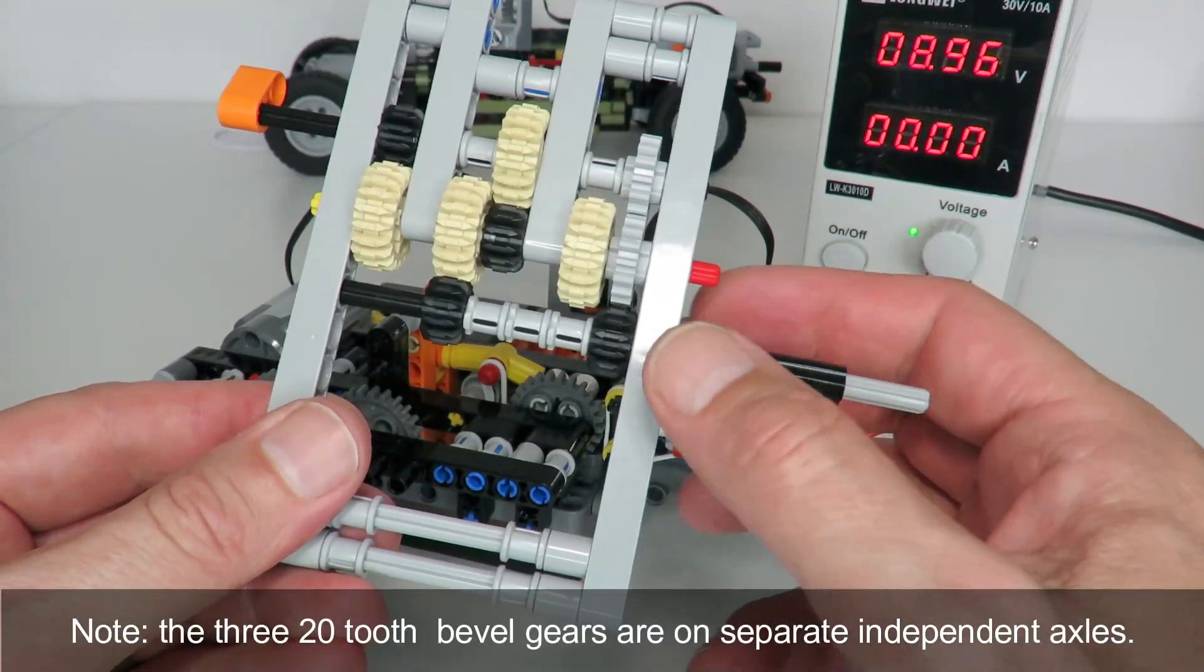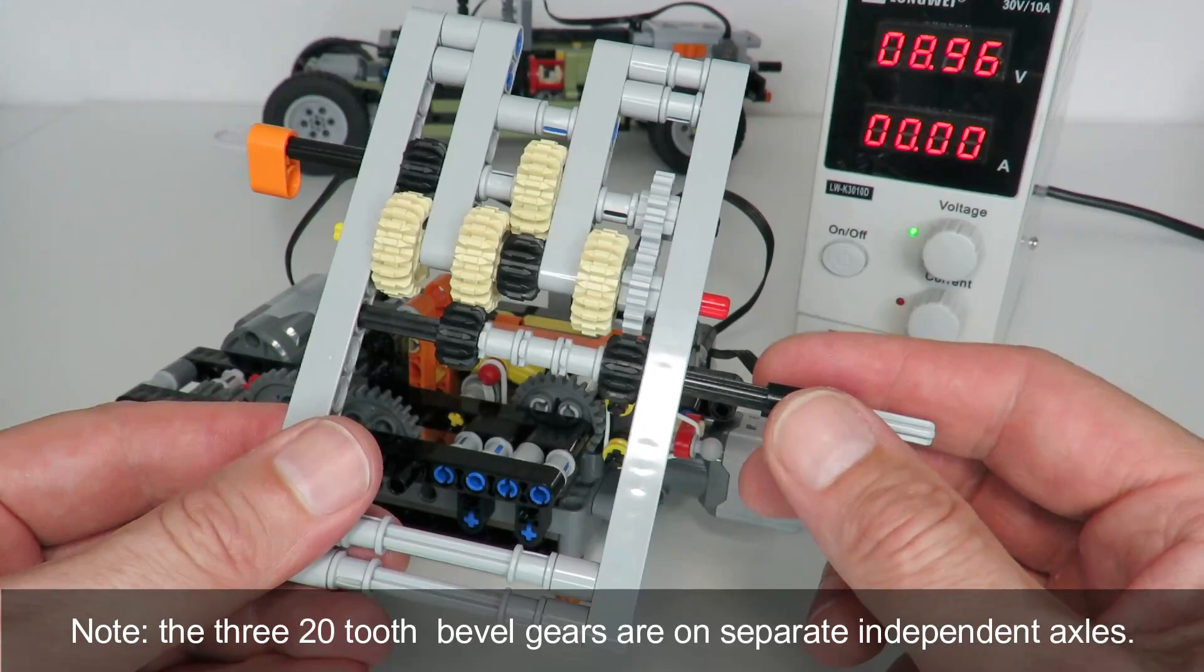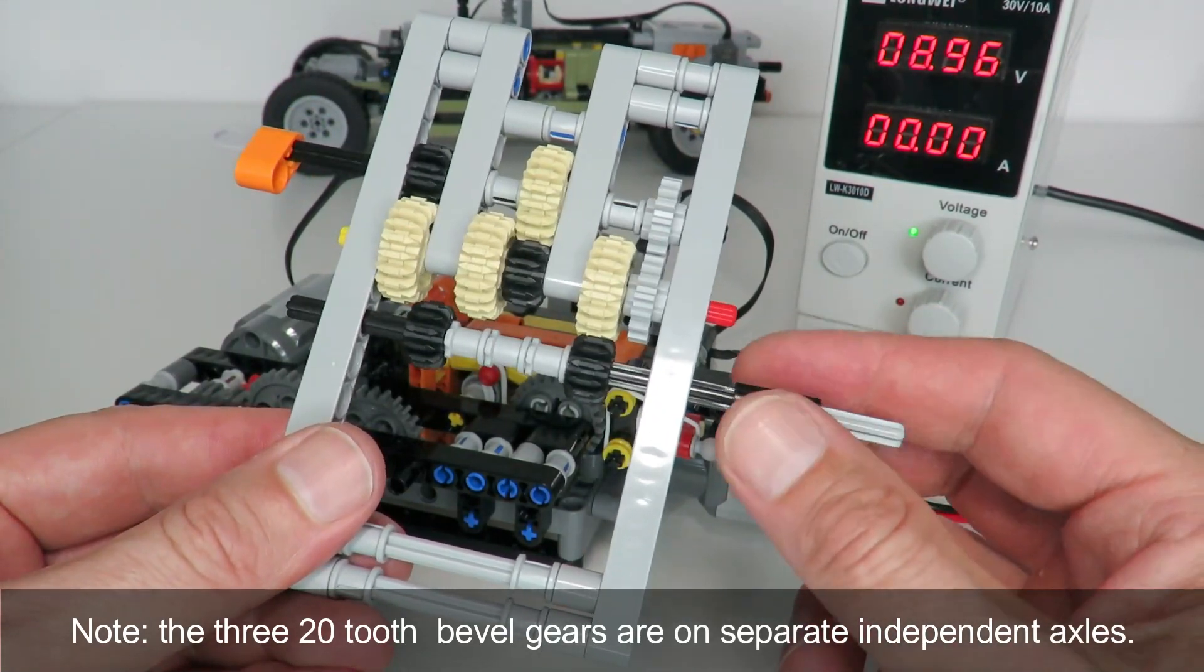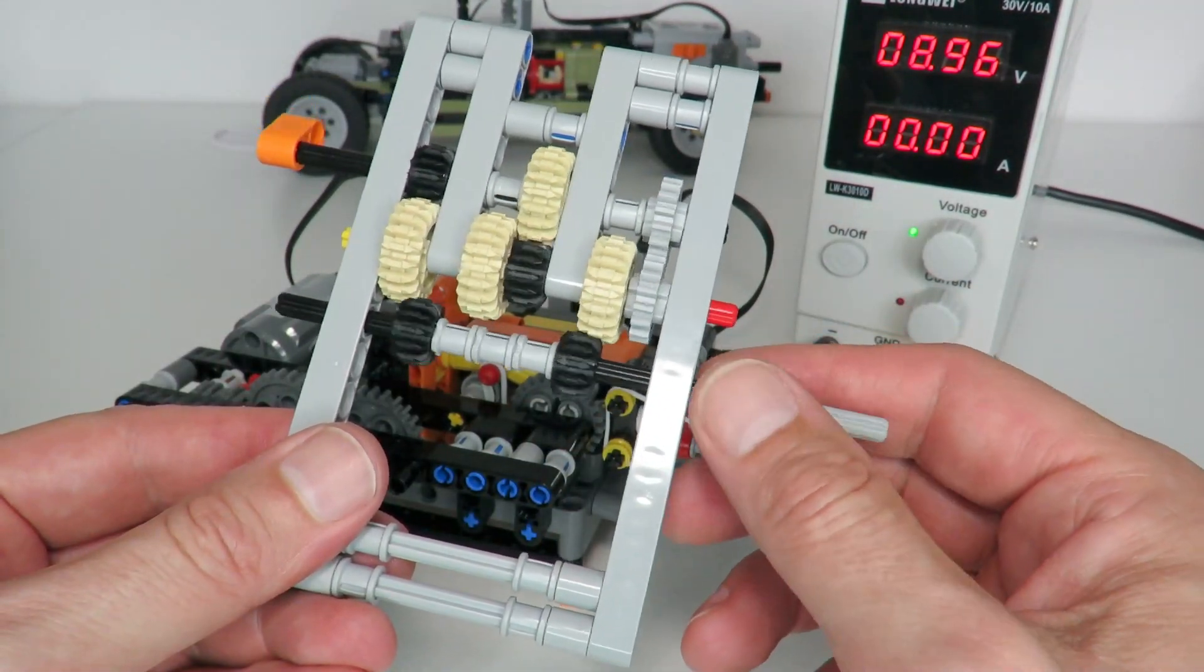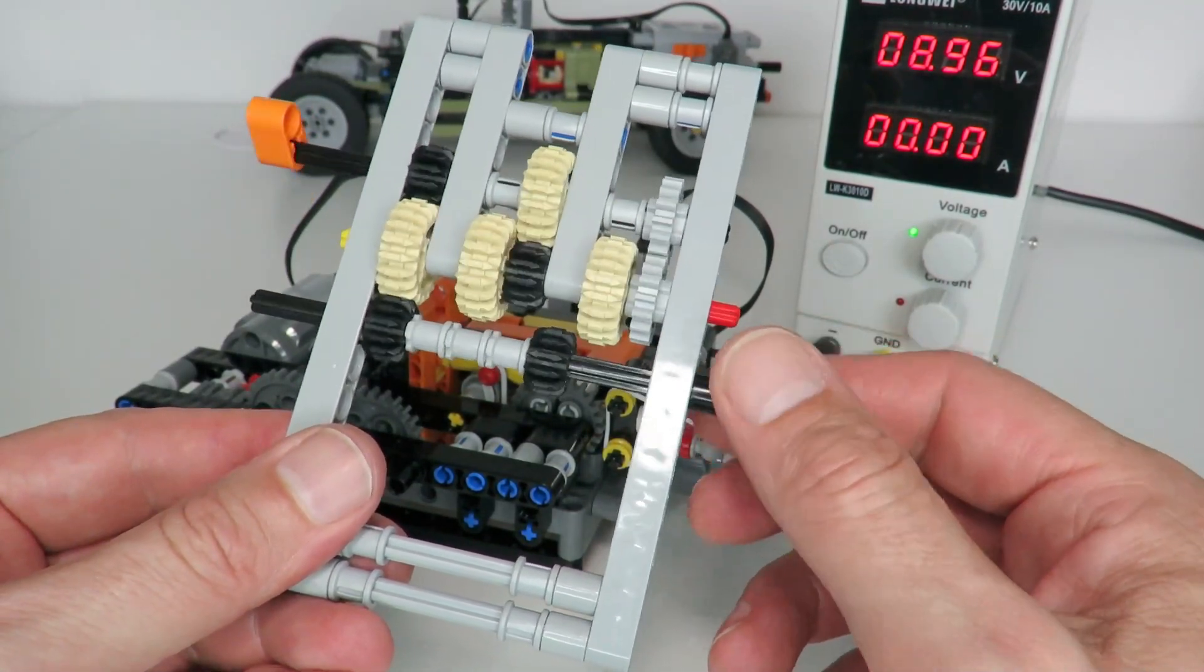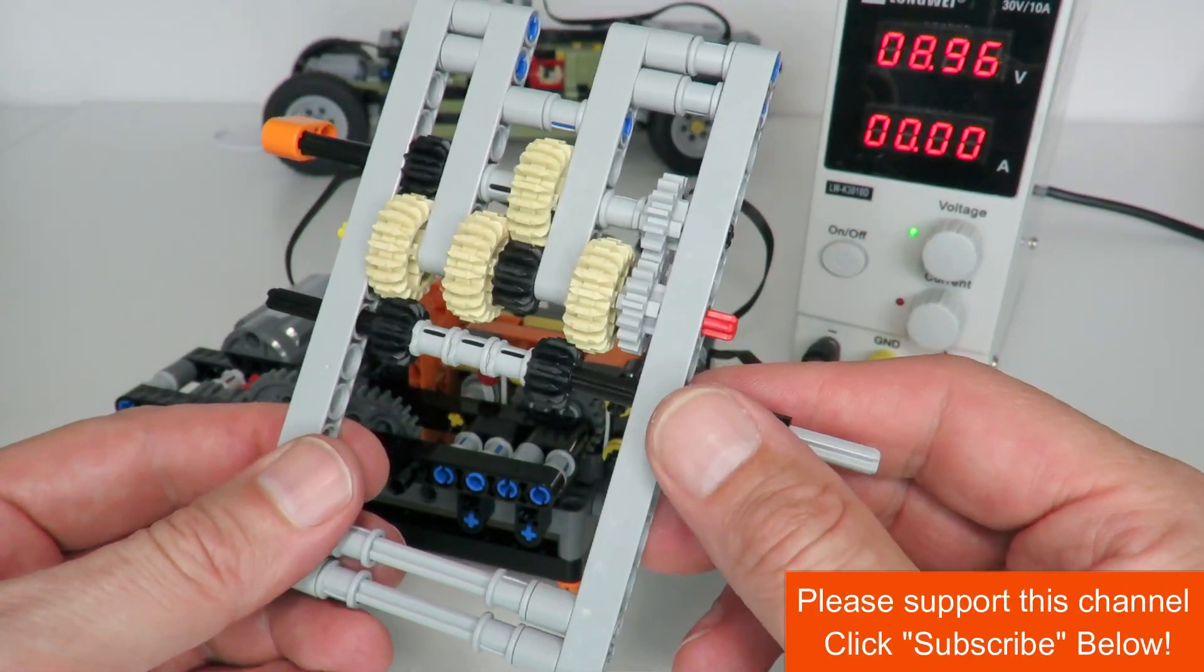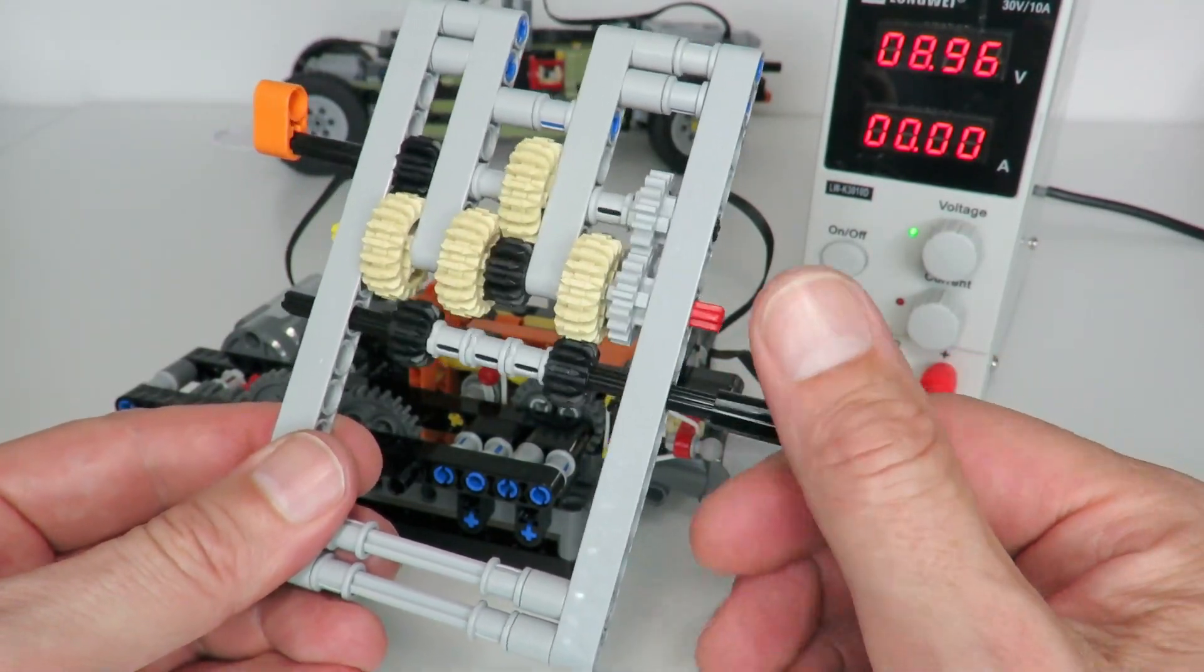So for example when we've got the axle on the way to the right we've got this one engaging. And that gives us that three to five gearing ratio at the output. And then by moving the axle across we're now engaging this gear there and creating the one to one gearing ratio. And finally all the way to the right we are generating the five to three gearing ratio. So this kind of avoids that flat gear engagement problem and it makes it relatively smooth to change gears.